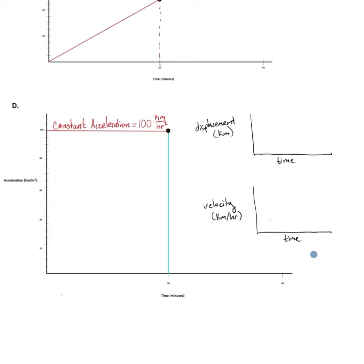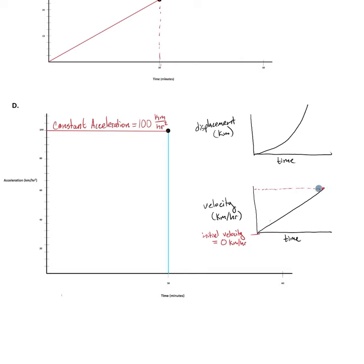Just like velocity is the slope of the displacement versus time graph, acceleration is going to be the slope of the velocity versus time graph. We can draw out our velocity versus time graph as having a constant positive slope of 100 kilometers per hour squared. Since our velocity is constantly increasing, that means that our displacement versus time graph cannot be linear — it has to be an exponential graph in which the slope constantly increases as x increases. Now, we can use a few context clues to determine that our initial velocity is 0 kilometers per hour. The question stem indicates that we are talking about the first 30 minutes of our journey, meaning that we're probably going to start from a standstill.